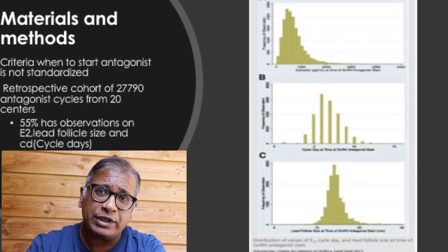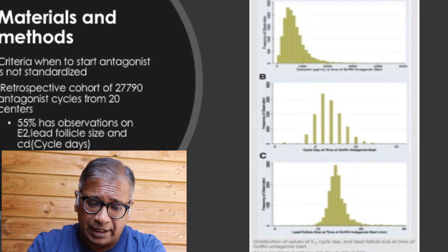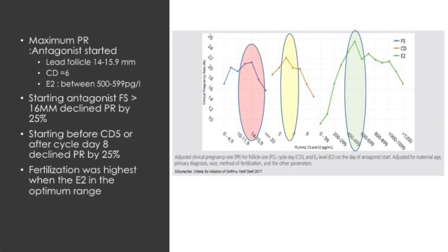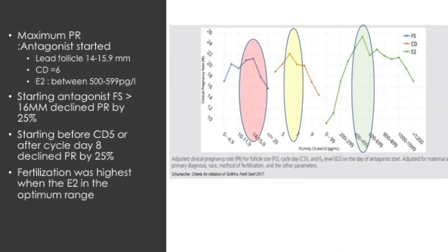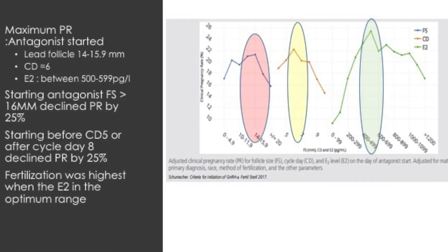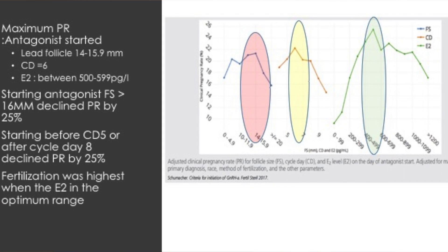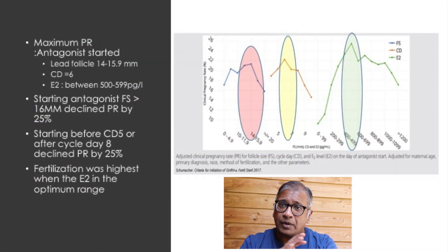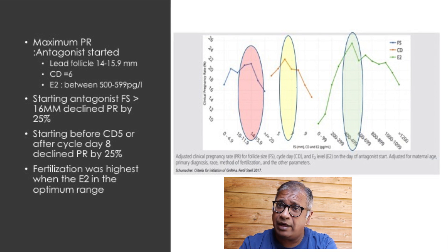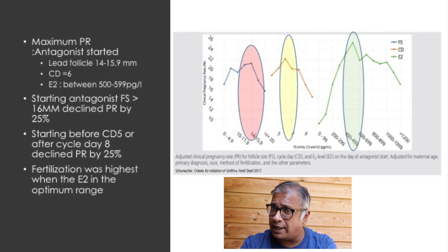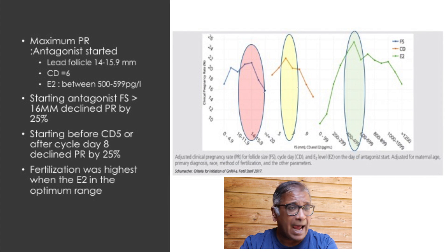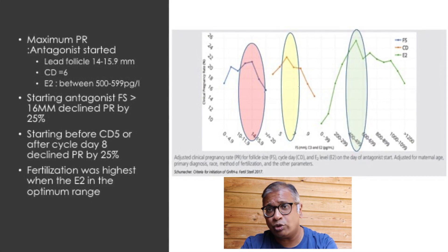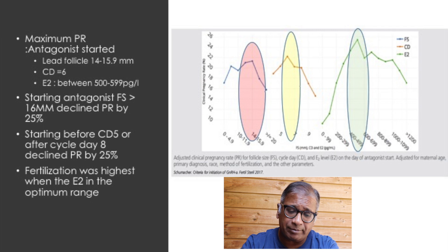And what did you see? Have a look at the graph. It showed that the maximum pregnancy rates were achieved when the antagonist was started with a lead follicle being between 14 and 15.9 millimeters, around day 6 of stimulation, and an estrogen level of between 500 to 599 picograms per litre.